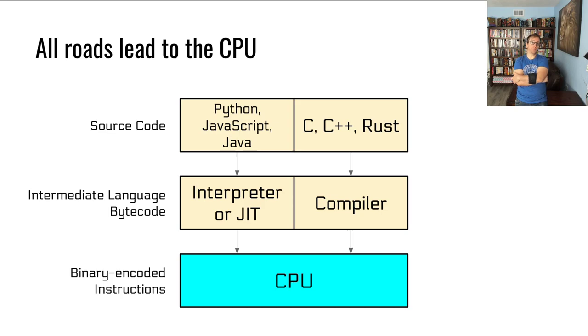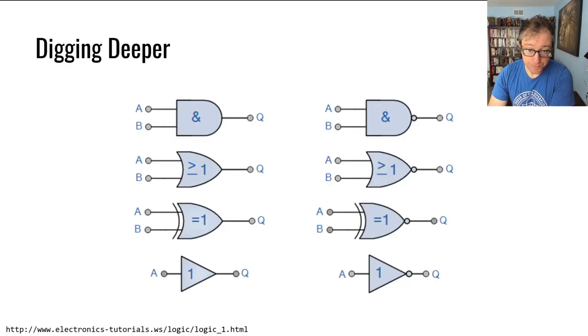One potential exception is languages like CUDA where you write code that gets executed on a GPU, but a GPU and CPU for this purpose are basically the same thing. Let's drill down into the CPU—whoa, that's really far down. This is basically as deep as it's reasonable to drill for a computer scientist. These are logic gates.